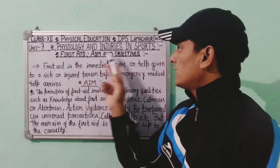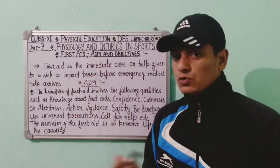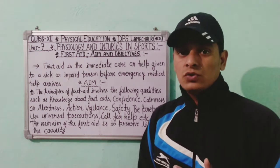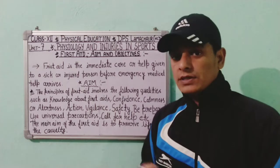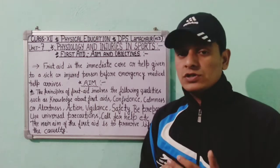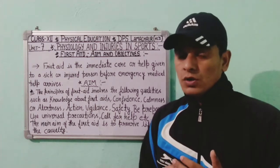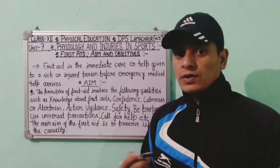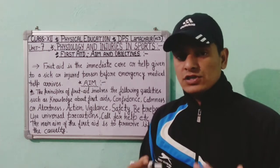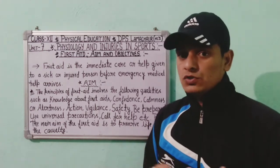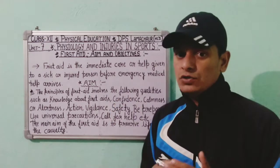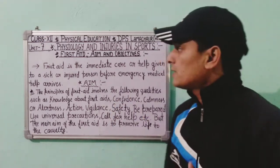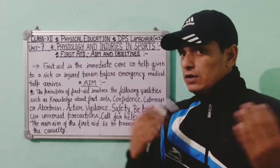Unit 7 is Physiology and Injuries in Sports. I have already prepared and shared all the videos of this chapter. If you haven't watched these videos, you can watch them now. I have given the links in the description. I suggest you must watch all the videos because this chapter is very important. Today we are going to start First Aid: aims and objectives.